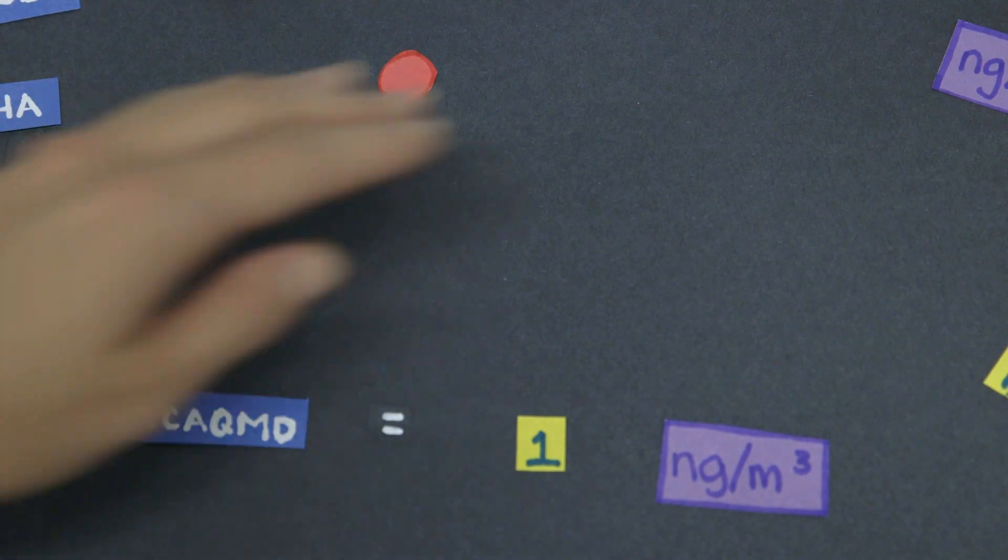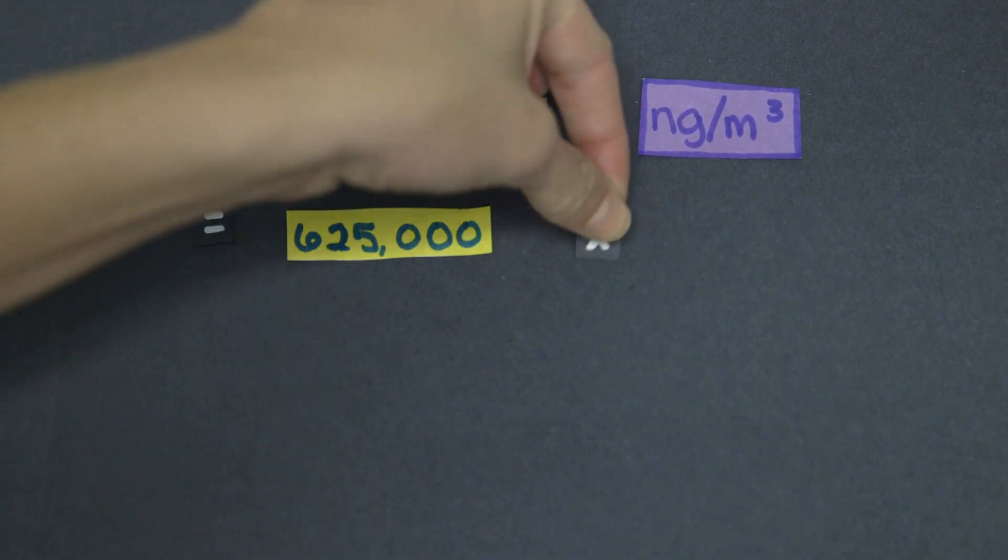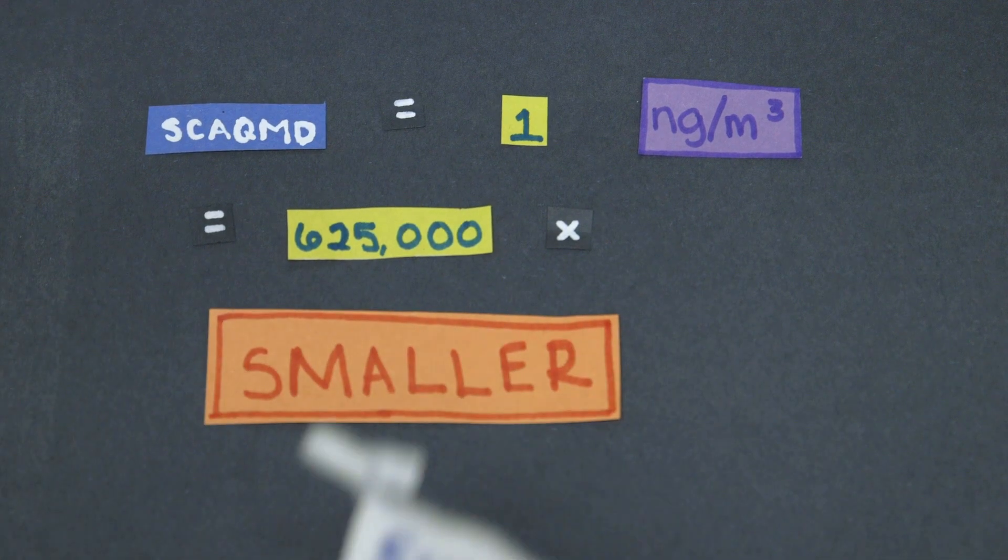Keeping in mind how small a grain of sugar is, the AQMD's limit is 625,000 times smaller than a grain of sugar.